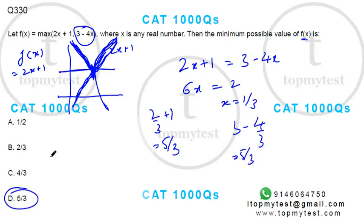So minimum value will be 5/3. That finishes this question, very simple question, should be done in about a minute's time, came in CAT previously.